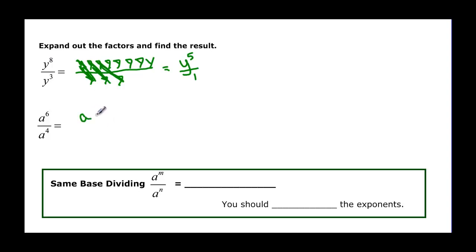Let's try again. 6 factors of a, 4, 5, 6 factors of a over 4 factors of a. Common factor top and bottom, we have 4 of them and I am left with a squared. So what did we do? I started out with an 8 and a 3 and ended up with 5. I started out with 6 and 4 and ended up with 2.